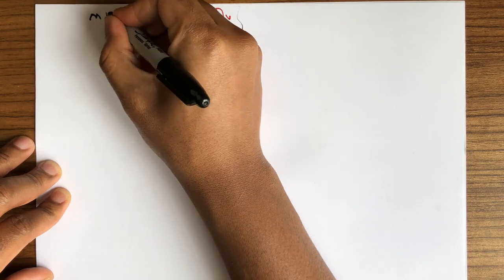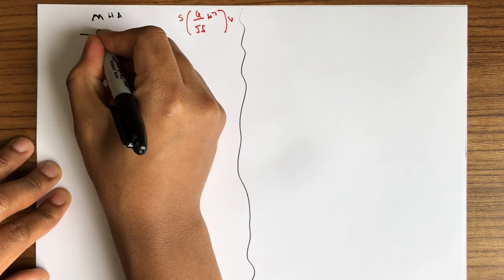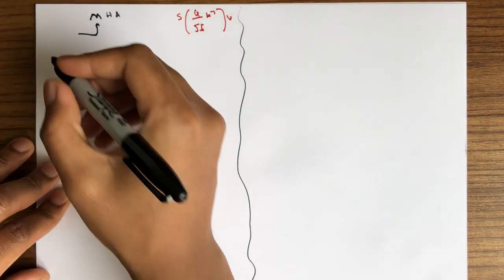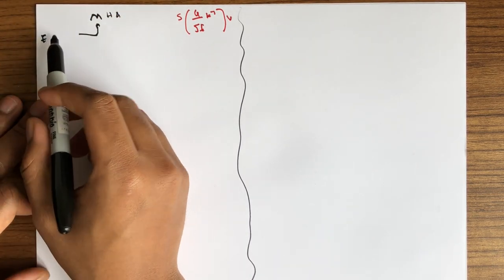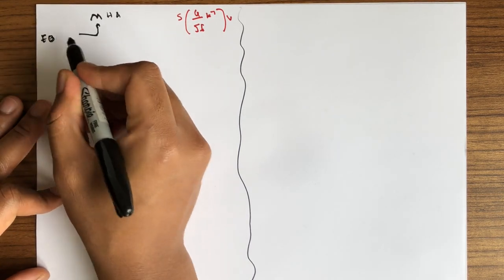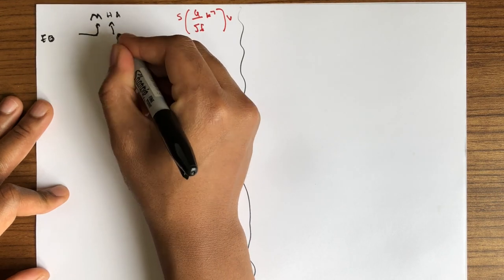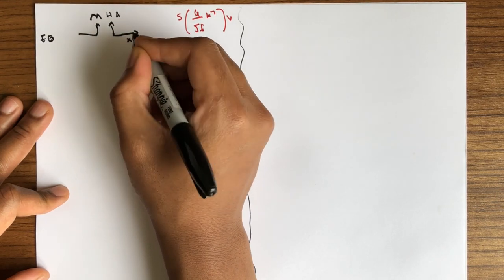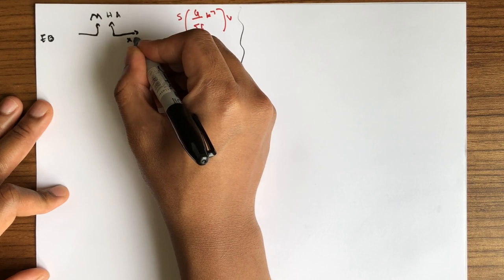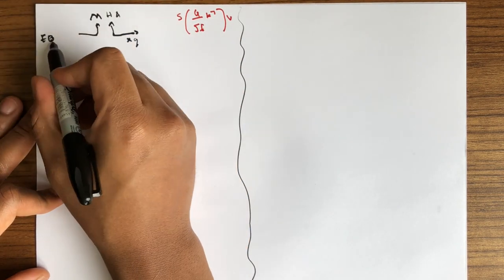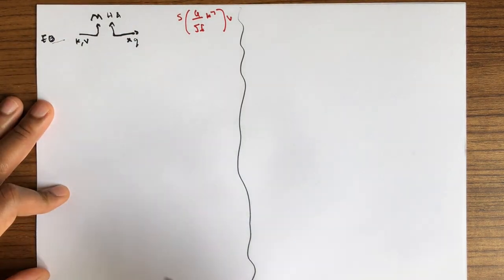The multi-head attention of this layer gets output from the encoder. The encoder output goes into the multi-head attention, and also the previous X that we saw in the previous video also goes into the multi-head attention.